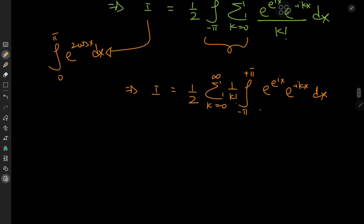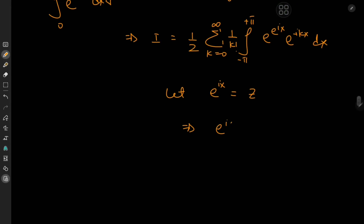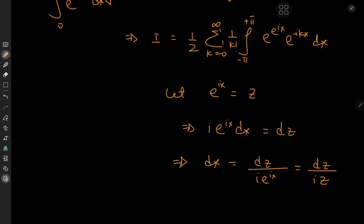Now we have this integral to solve, which isn't really very hard — all we need is the residue theorem. But before that, we need a very nice transformation. We're going to let e to the ix equal z. This implies that e to the ix times i dx equals dz on differentiation, which further implies that dx equals dz divided by i times e to the ix. And since e to the ix equals z, we have dx equal to dz divided by iz.